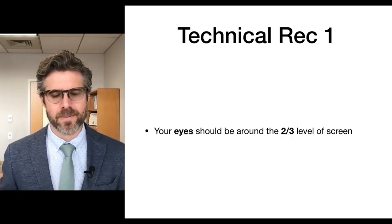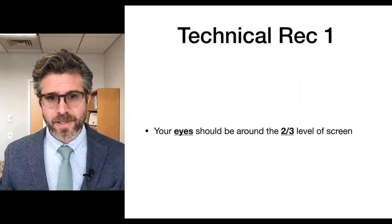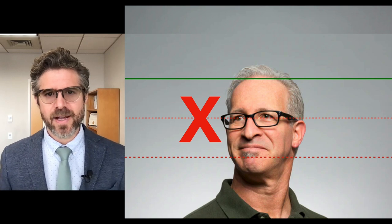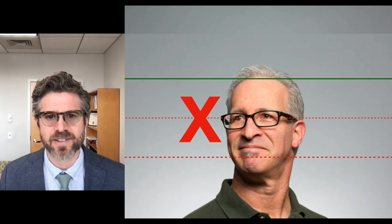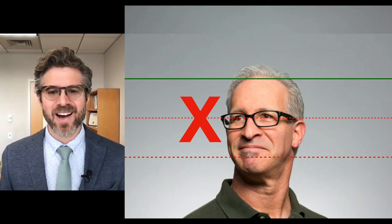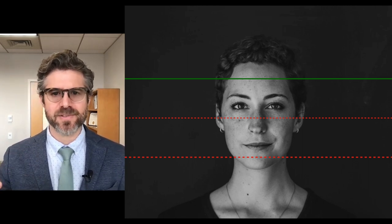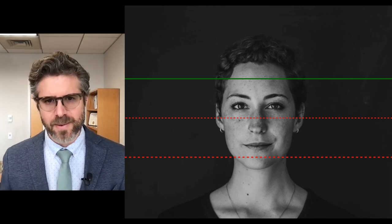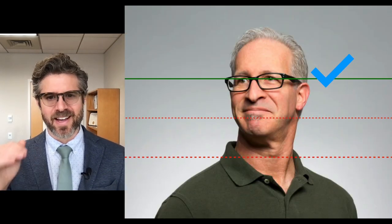Technical recommendation number one: your eyes should be around the two-thirds level of the screen. Right now you should see that with my eyes in this current framing. The standard floating head view of Zoom that you see almost every day — most people sit with a guillotine view of the neck at the bottom — you don't want your eyes in the middle of the screen. I recommend you go for that TV anchor look of a professional interview or shoot, and have your eyes at the two-thirds mark of the screen.